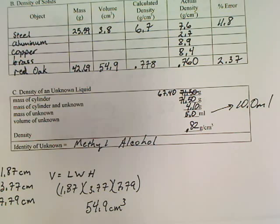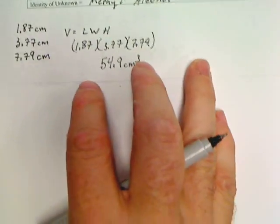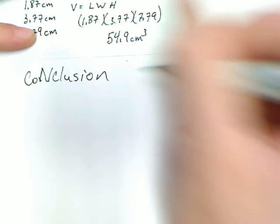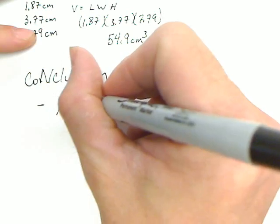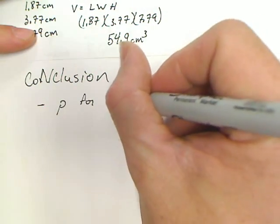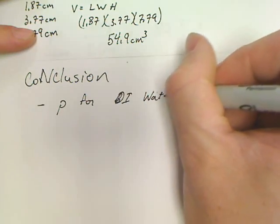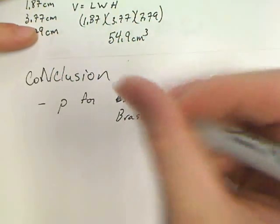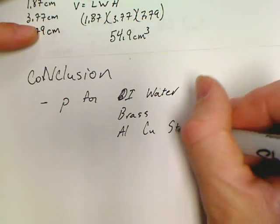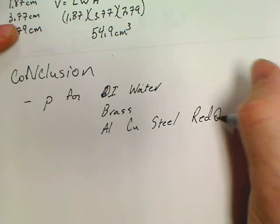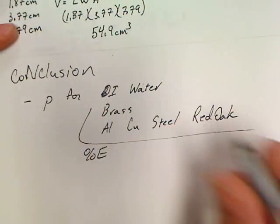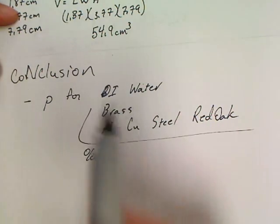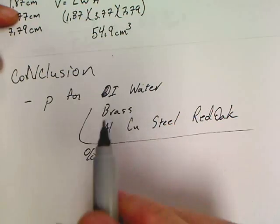Alright. So what do I want in a conclusion for this lab? In conclusion for this lab, the things you should have: I want a density for distilled water, brass, aluminum, copper, steel, and red oak. And I also want for each one of those, I want you to say a percent error. If you can figure out a way to summarize it so it's not repetitive, do not write a table. I want a paragraph. I want sentences for this.